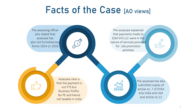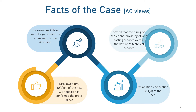The Assessing Officer also stated that the assessee had not furnished any Forms 15CA or 15CB, which were mandatory to be filed for making remittances. After the query, the assessee explained that payments made to ESM-SYS LLC were in the nature of services provided for site promotion activities. The assessee submitted copies of Article 7 and Article 12 of the India-USA Double Taxation Avoidance Agreement, explaining that the nature of services was not technical services or royalty but business profit, and further, ESM-SYS LLC USA had no permanent establishment in India. Therefore, the same was not taxable in India and provisions of Section 195 did not apply.